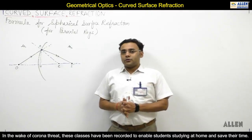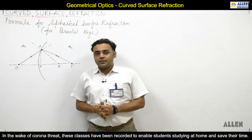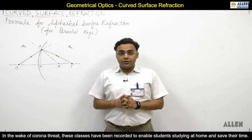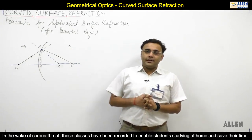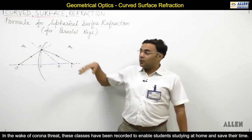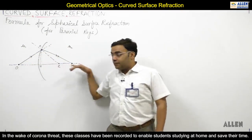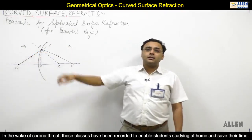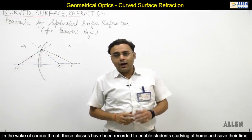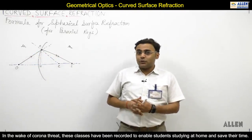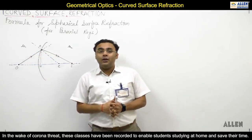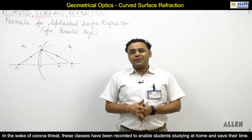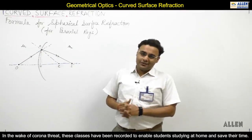Now we are going to the next topic, which is the formula for spherical surface refraction, only for paraxial rays. Paraxial rays are those that make a small angle with the principal axis. If the angles I and R are small, then we can apply the small angle approximation: sin θ = θ = tan θ.